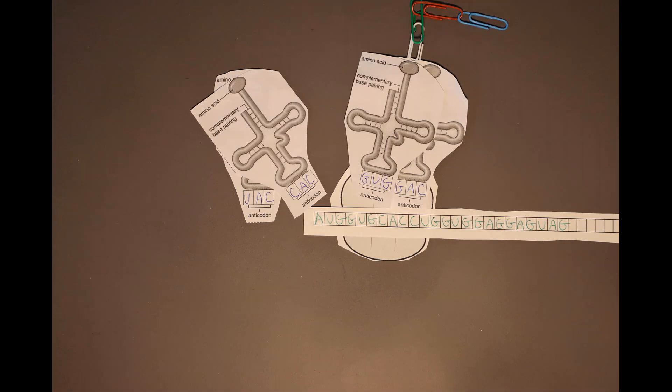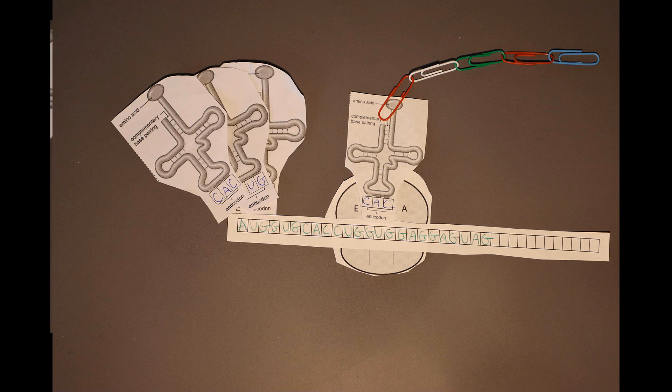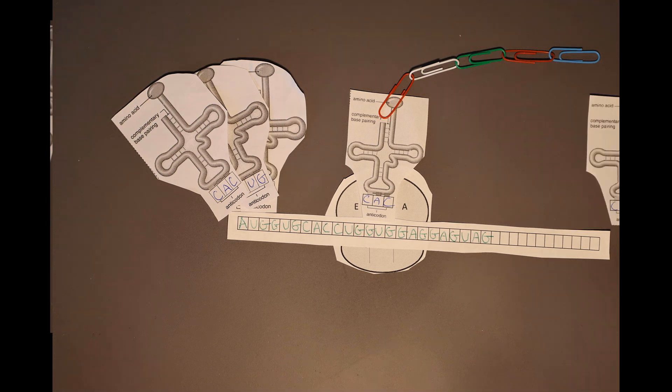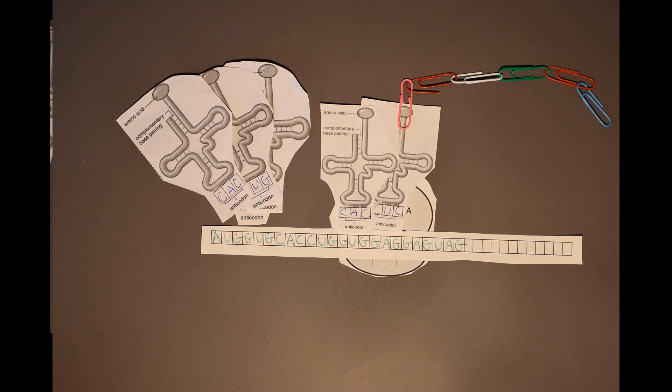And again, we transfer the chain of amino acids to the A site amino acids, and we continue by bringing our next tRNA, this time another red amino acid, and we shift our chain from the P site to the A site. We continue to do that as we move along, and now we bring our next tRNA in, this time with our pink amino acid, CUC on the anticodon of the tRNA, shifting our polypeptide chain of paperclips to the pink amino acid in the A site.